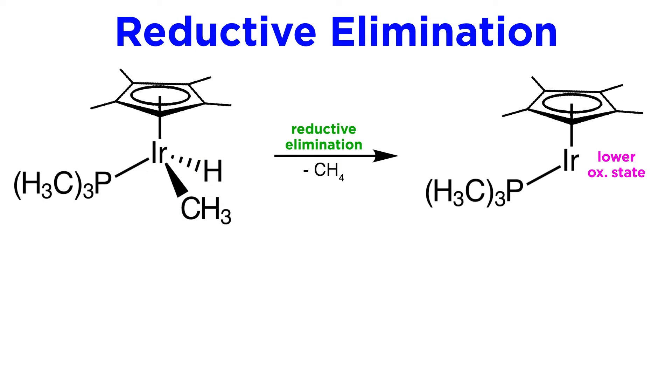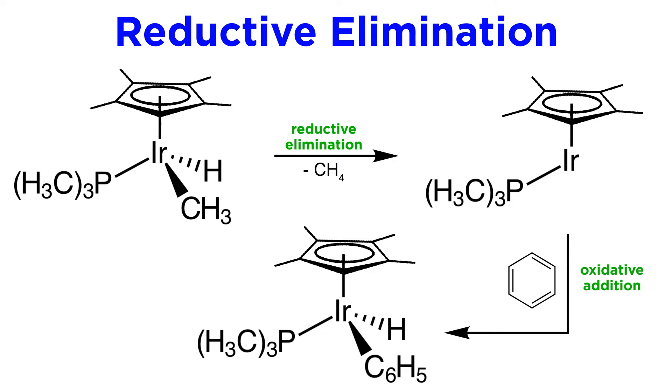Once again, iridium will have its oxidation state reduced by 2 as a result of this process. Complexes that undergo reductive elimination are primed for oxidative addition, as they now have lower oxidation states and coordination sites available, so a molecule like benzene could then react to produce this complex, as it is the case that even aromatic CH bonds can undergo oxidative addition. Indeed, oxidative additions and reductive eliminations are basic steps in some important catalytic reactions we will see later in the series.